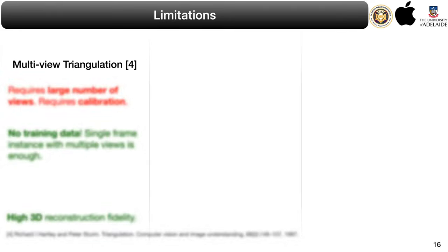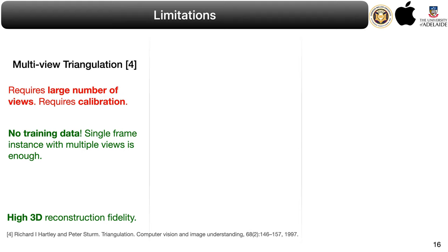Addressing some limitations, classical multi-view triangulation approaches can infer 3D structure solely from rigid 2D correspondences stemming from cameras at a single time instant, meaning it does not require any training data, but it requires multiple views and exact calibration of the cameras. If given sufficient calibrated physical camera views, it still remains the gold standard for 3D reconstruction.